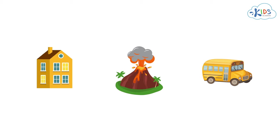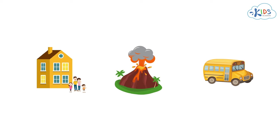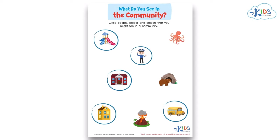Look at the last set of pictures: a house, a volcano, and a school bus. Which of these would you see in a community? A house and a school bus. People live in houses and children ride buses to school. Volcanoes can be dangerous and don't belong in a community.